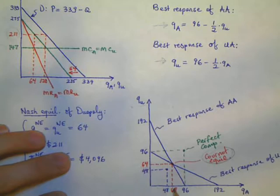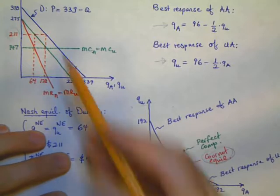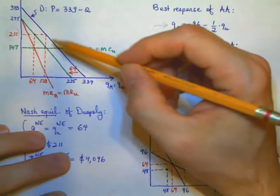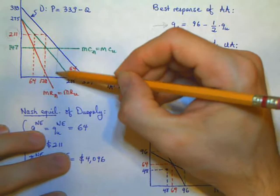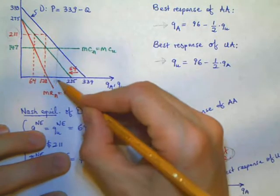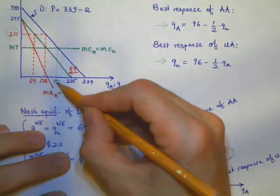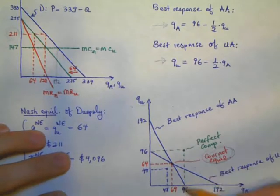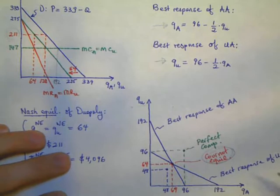The intersection point is our Cournot equilibrium at 64—American Airlines produces 64 and United Airlines produces 64. Not only that, it's possible to compare this point with perfect competition, in which both firms would produce 96 units. On this picture, it would be that point, this is where the marginal cost curve meets the total demand curve. So this point here would be 192 total. Knowing that we have two firms, they would each produce 96 units if they acted like perfectly competitive firms.